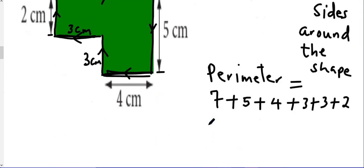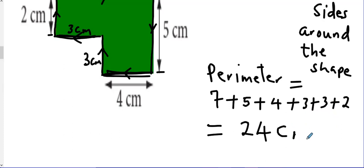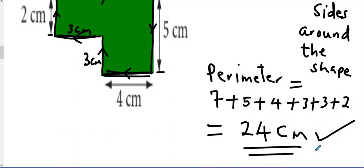Going ahead adding all these numbers: 7 plus 5 is 12, plus 4 is 16, plus 3 is 19, plus 3 is 22, plus 2 is 24. The perimeter is 24 centimeters.